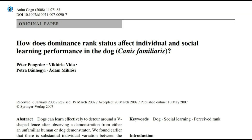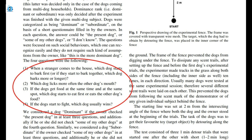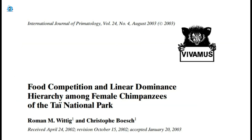Now let's have a look at some scientific papers and other respected sources of information. In this first one from 2008, they were looking at how rank can affect learning performance. The way they determined rank was by asking dog owners questions such as: which dog barks when a stranger comes to the house, which dog licks the other dog's mouth more often, which dog gets to the food first, and which one usually wins if the dogs fight. This one was about food competition and linear dominance hierarchy among chimps.